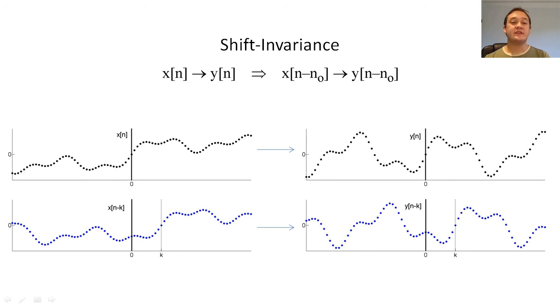We say that a system is shift invariant if a shift in the input always causes a corresponding shift in the output.